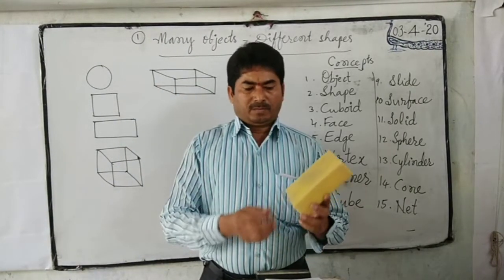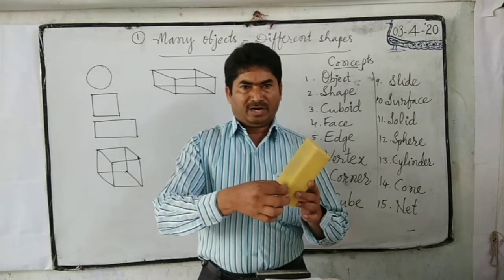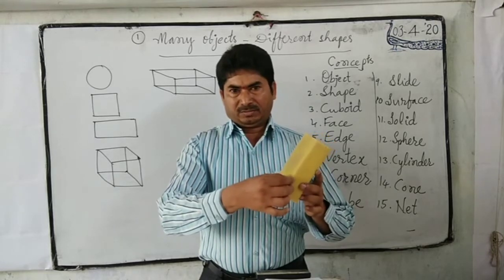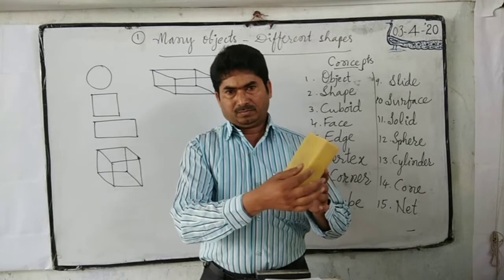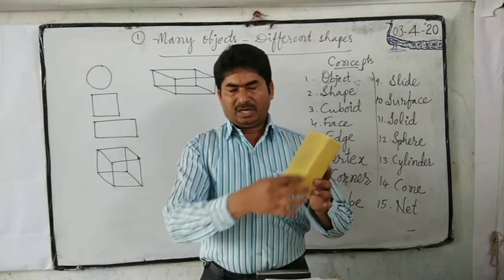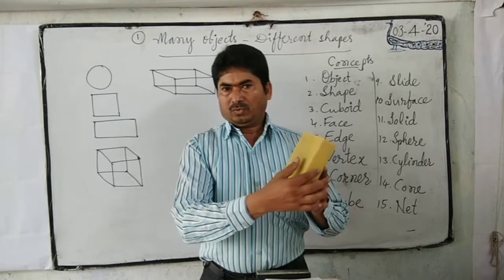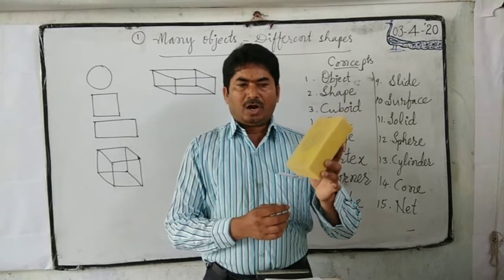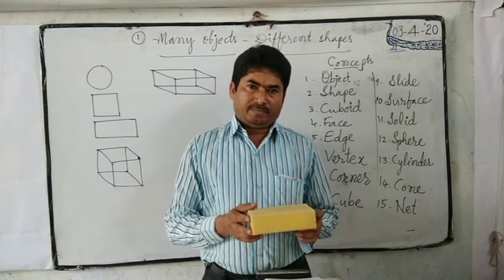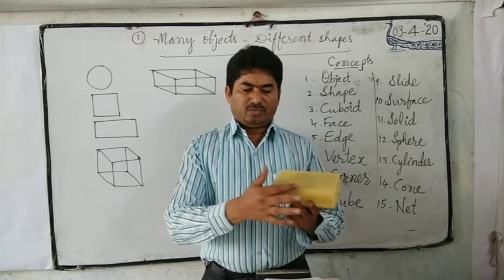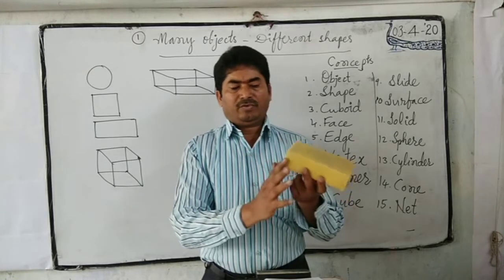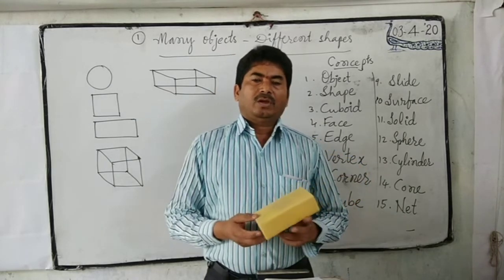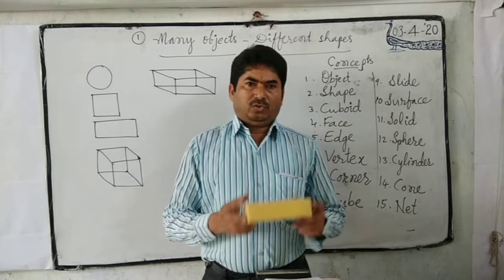Next, edge. What is an edge? The meeting place, or joining place, of two faces is called an edge. How many edges does a cube have? We can count: one, two, three, four, five, six, seven, eight, nine, ten, eleven, twelve. A cube has twelve edges.